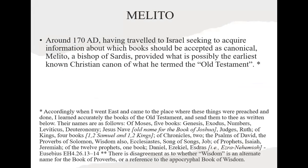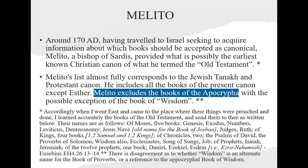A Christian called Melito who lived around 170 AD referred to a set of books — probably the oldest list we have of what Christians termed the Old Testament. The list he gives is virtually identical to what we have as the Old Testament. He includes all the books we have except Esther and excludes all the books of the Apocrypha, with the possible exception of the Book of Wisdom — though when he mentions that, he may have been referring to Proverbs as a pseudonym. So already by 170 AD, we have an early Christian with a canonical list that doesn't include the Apocrypha.